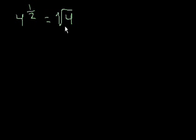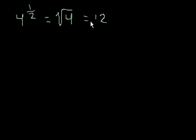Another way to think about it: what times itself is equal to 4? We know that the square root of 4 is 2. It could actually be positive 2 or negative 2, because we know that either of those numbers, when they're squared, could equal 4. But for the sake of this one, we'll assume it's always the positive square root. So 4 to the 1 half is equal to 2.